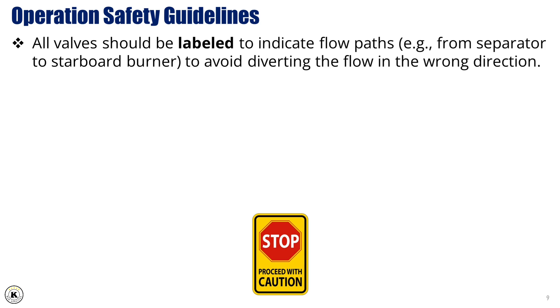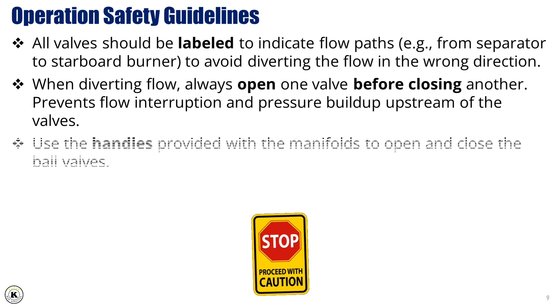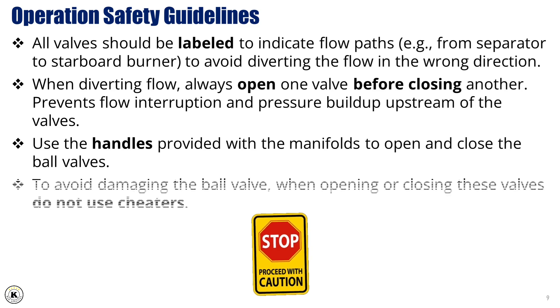Operation safety guidelines: All valves should be clearly labeled to indicate the correct flow paths — for example, from separator to starboard burner — to minimize the risk of diverting the flow in the wrong direction. When diverting flow, it is important to always open the desired valve before closing the one currently in use. This procedure prevents flow interruption and avoids any pressure buildup upstream of the valves. The ball valves should be operated using the handles provided with the manifolds, ensuring safe and proper valve movement. To avoid damaging the ball valves, operators must never use cheaters or additional leverage tools when opening or closing the valves.